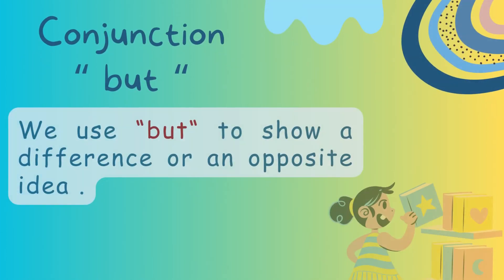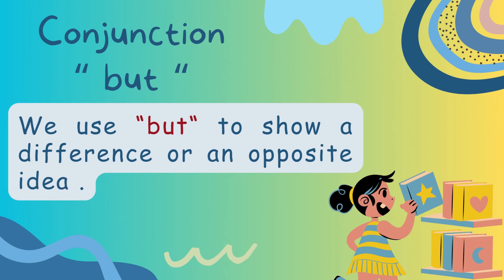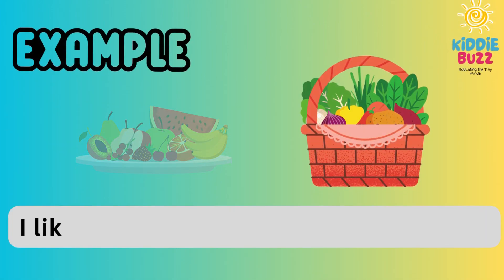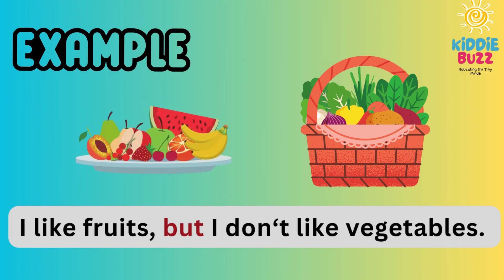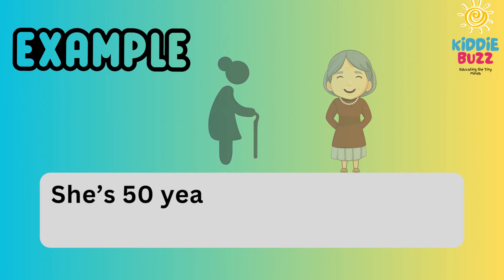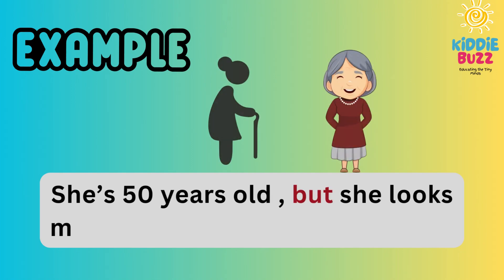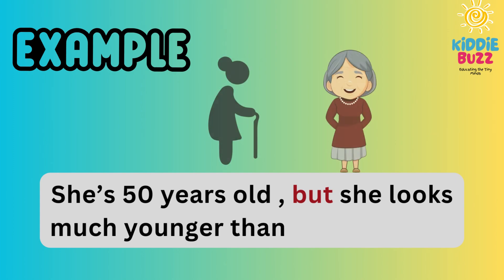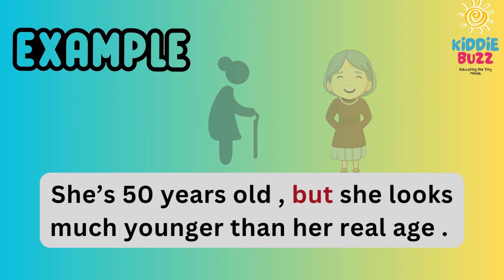Conjunction BUT. We use BUT to show a difference or an opposite idea. For example, 'I like fruits but I don't like vegetables.' The conjunction BUT is showing a difference — that we like fruits but don't like vegetables. Another example: 'She is 50 years old but she looks much younger than her real age.' The conjunction is BUT.